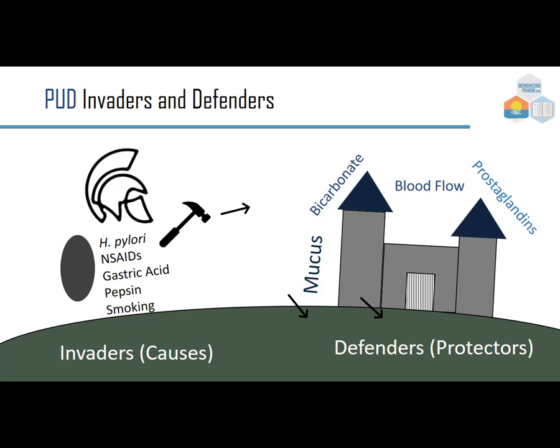One way to think about peptic ulcer disease is as invaders and defenders. The invaders include H. pylori, NSAIDs, gastric acid, pepsin, and smoking — these five causes can damage the stomach or duodenum. Our defenders or protectors include mucus, bicarbonate, blood flow, and prostaglandins.